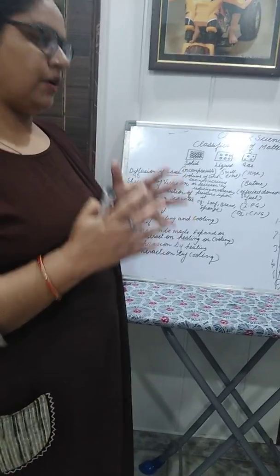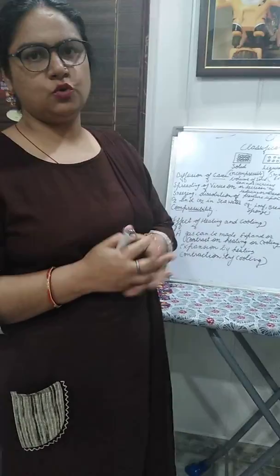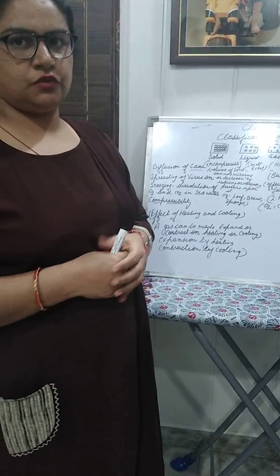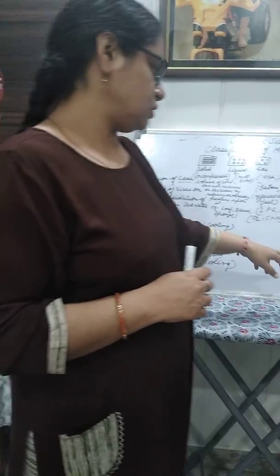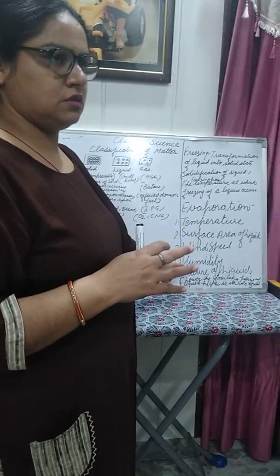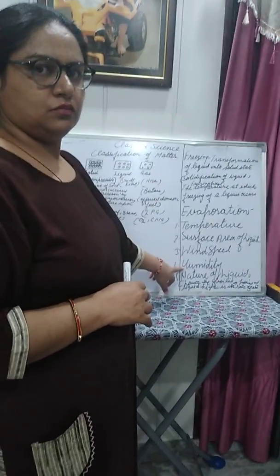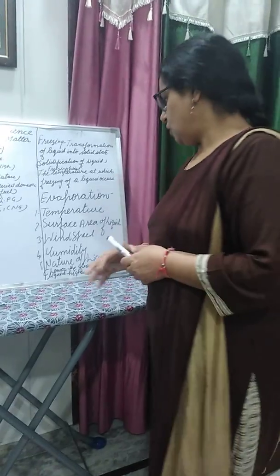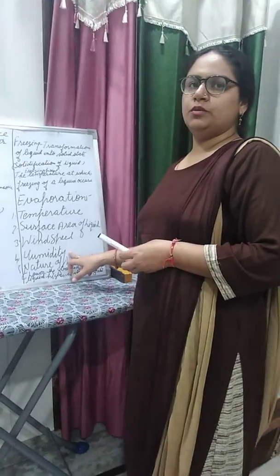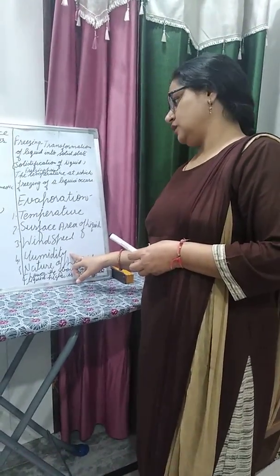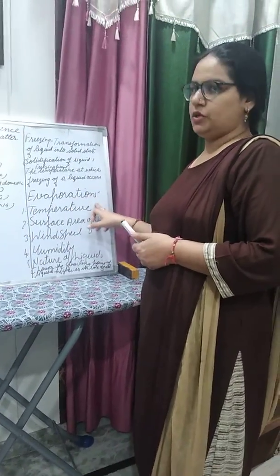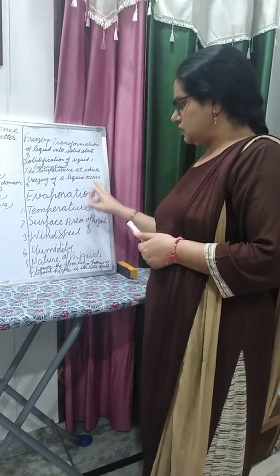Humidity refers to the water vapor present in the air. Take the example of drying clothes during the monsoon season — drying takes longer because water vapors are already present in the air. So, higher the humidity, lower the evaporation.